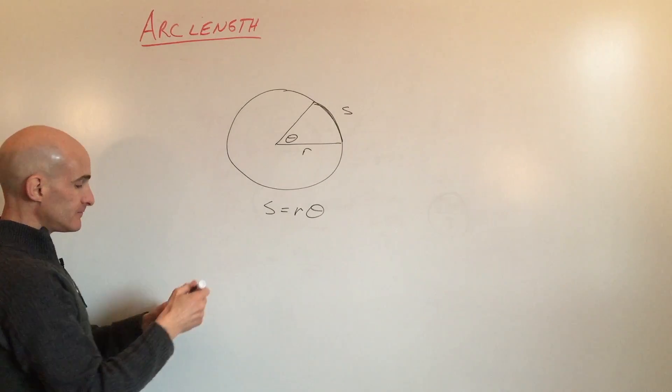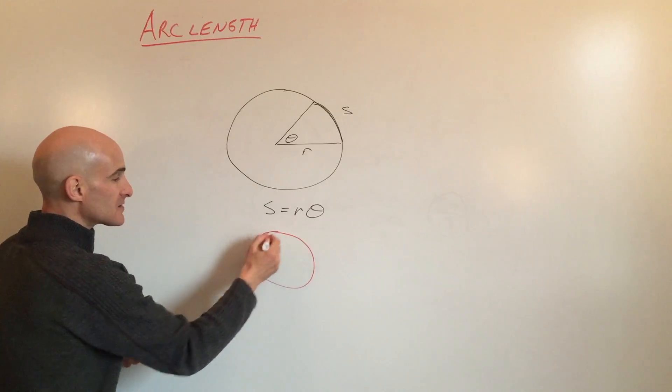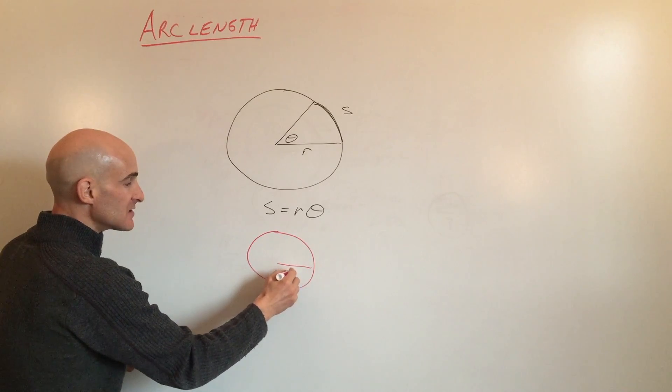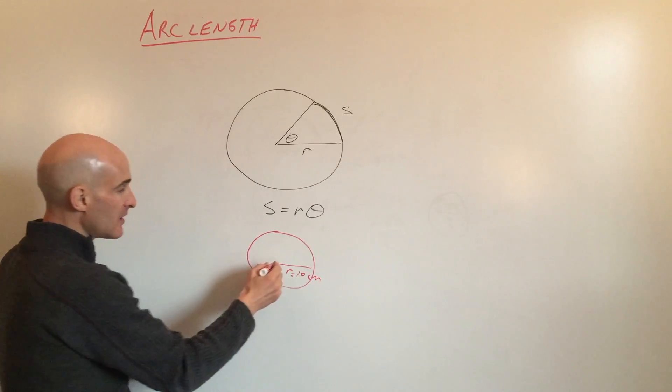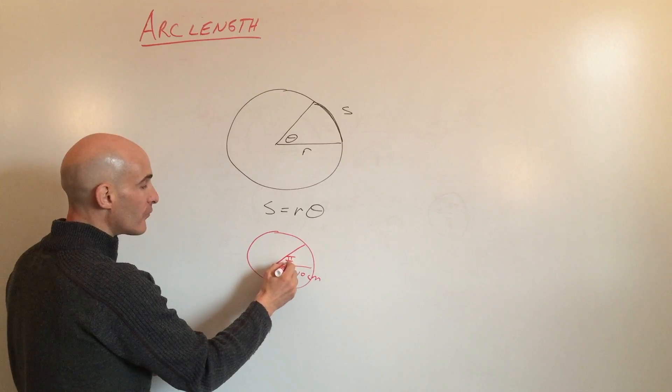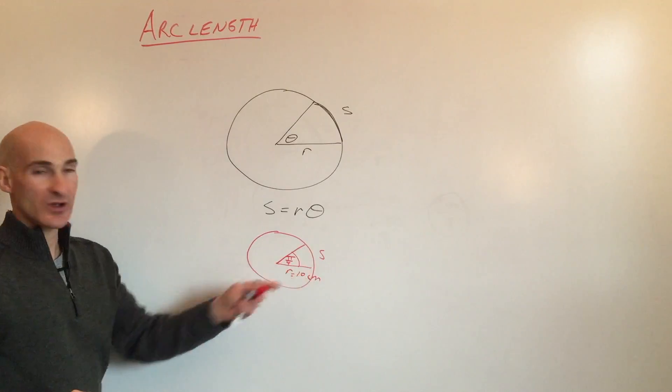So let's look at an example. Say we have a circle like this. Say the radius equals 10 centimeters. Say this angle here is pi over 4 radians. And we want to find out what that arc length is right there, S.